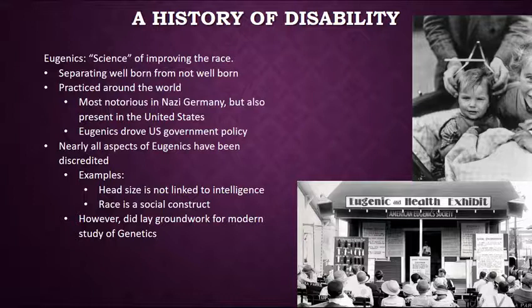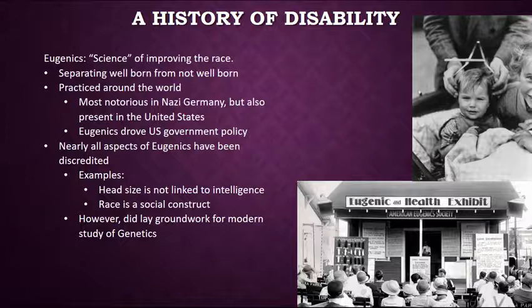Nearly all aspects of eugenics have been discredited. With that said, eugenics was a terrible thing, but there were some findings — just like with electroshock therapy — that did lay the groundwork for modern science. By tracing human lineages, a few diseases were identified through this really ugly, not-good science, which was then corrected in the 1940s, 50s, and 60s to become what genetics can be today. Genetics is a very worthwhile discipline, but it is important to remember where some of our scientific advances came from.